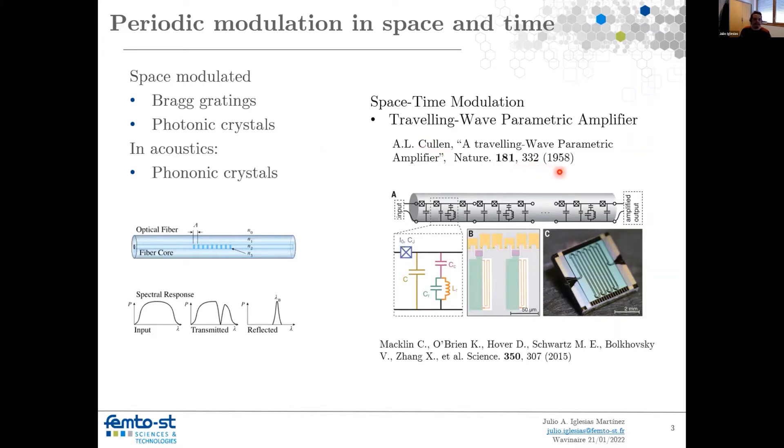The oldest example is from 1958 for a traveling wave parametric amplifier that is a transmission line similar to this one. When you modulate one of the parameters, for example, the capacitance, to amplify a signal.